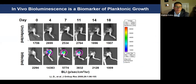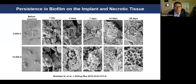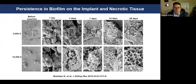We were able to show that the light coming off of the tibia really is a marker of planktonic growth of the bacteria. Around 11 days you see it kind of disappears — by 14 and 18 days, there's no more light coming out. That's because the bacteria are forming a biofilm. And this should scare all surgeons and hopefully change the way you think about your early infections.